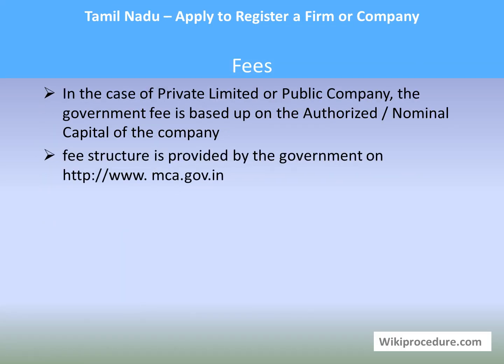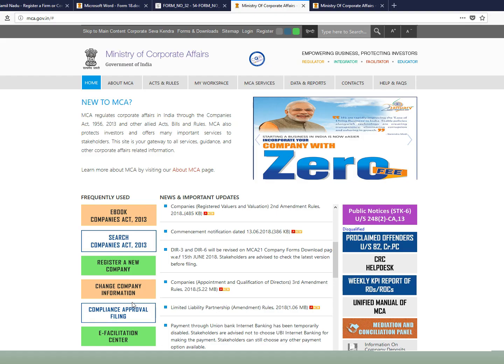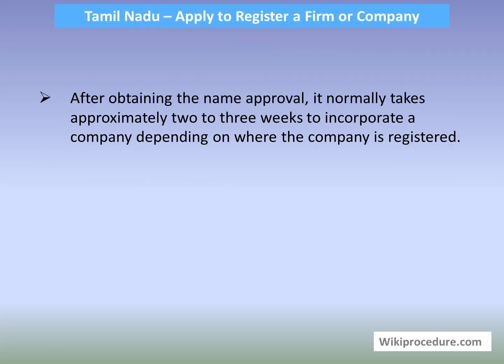Fees: In the case of a private limited or public company, the government fee is based on the authorized or nominal capital of the company — the fees are calculated from the declared capital amount. The fee structure is provided by the government on the site mca.gov.in, which has been shown, and further information can be obtained there.